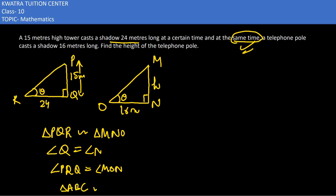This means triangle PQR would be similar to triangle MNO. So we can write here PQR and MNO.